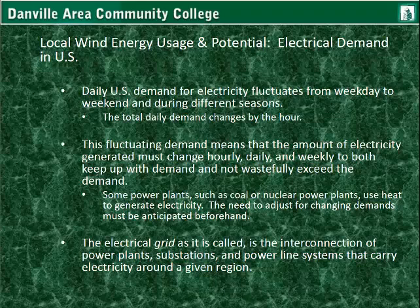The daily United States demand for electricity fluctuates from weekday to weekend and during different seasons for obvious reasons. Different times of the year, different climate, different demand. The total daily demand changes by the hour. This fluctuating demand means that the amount of electricity generated must change every hour, daily, weekly, to keep up with demand and not exceed demand.